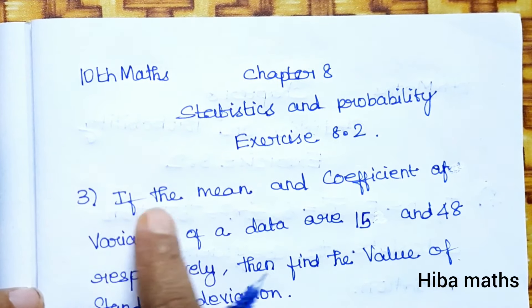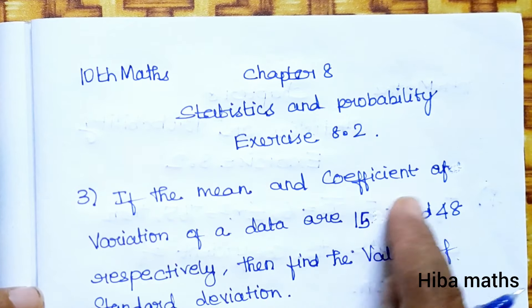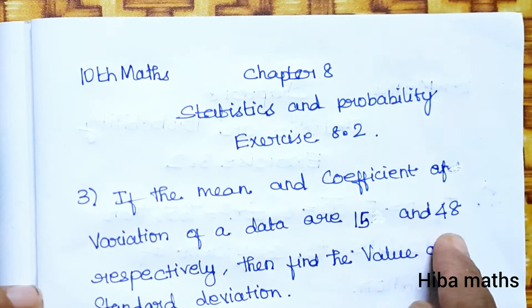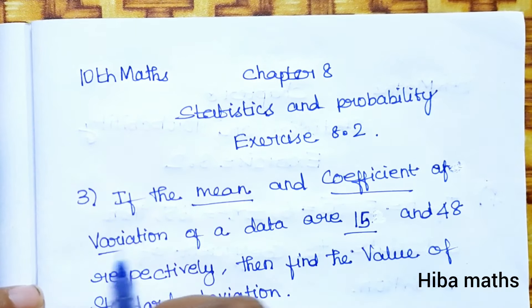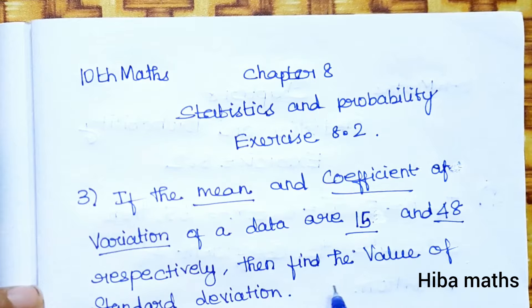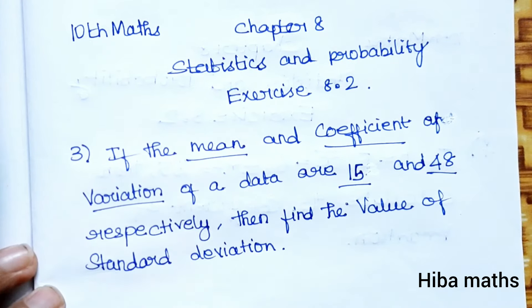The question says: if the mean and coefficient of variation of a data are 15 and 48 respectively, then find the value of standard deviation.